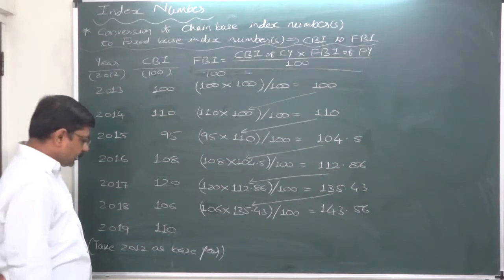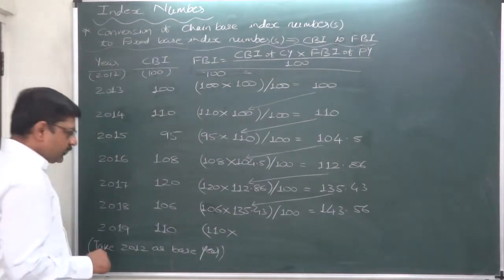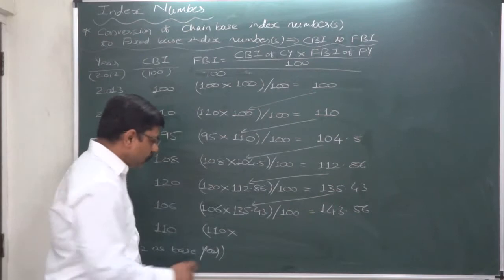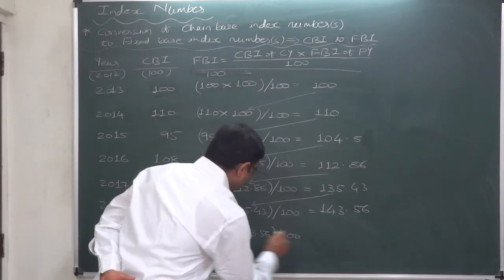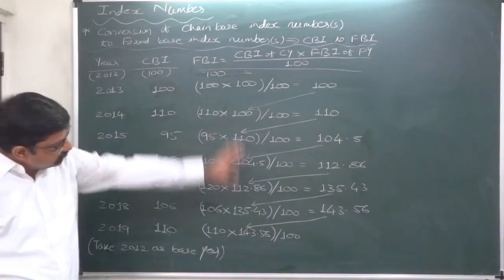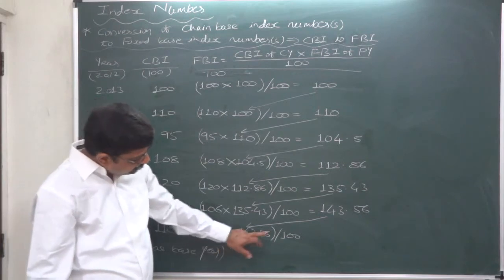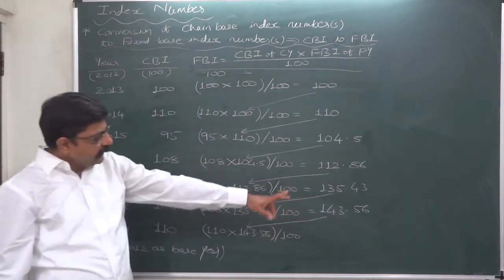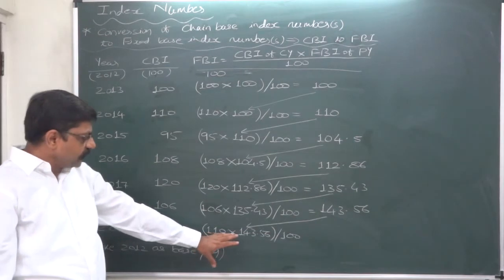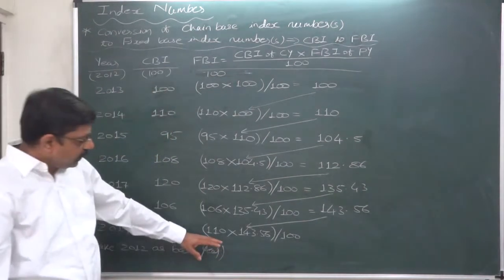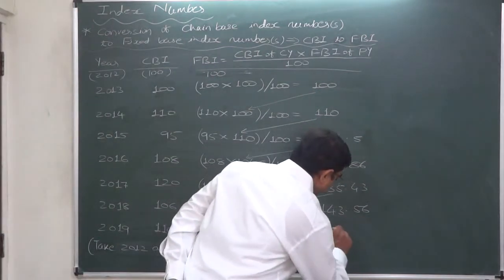For 2019: the chain base index number for the current year is given as 110, multiplied by the fixed base index number of the preceding year — 143.56, calculated by us — divided by 100. Remember: always take the fixed base index number of the previous year as already calculated by us; any mistake there will make all further answers wrong. 110 multiplied by 143.56 divided by 100 gives 157.96.